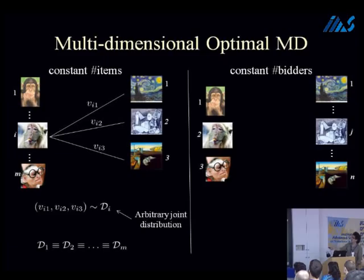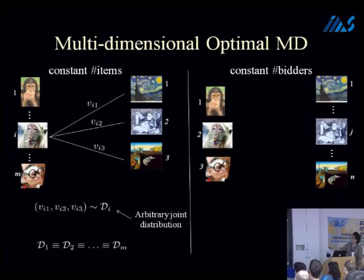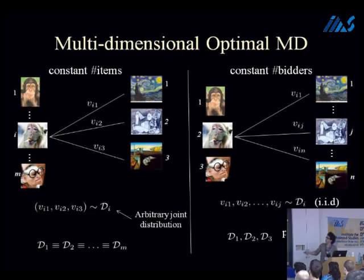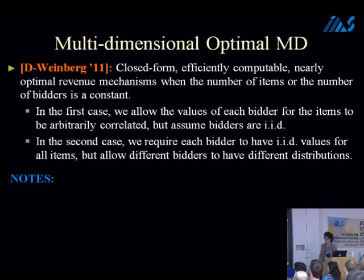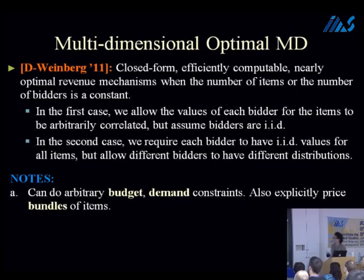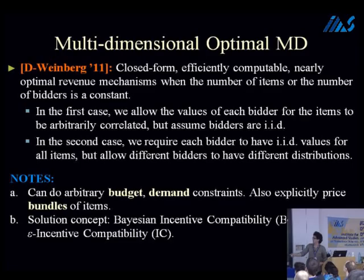The constant number of bidders result: I have three bidders, say, and N items — the values are IID from some distribution but this distribution could be different for different bidders. I can do arbitrary budget and demand constraints, and the mechanisms are actually price bundles. The solution achieves exact Bayesian incentive compatibility or epsilon incentive compatibility — you choose what you want. Nearly optimal means: when the value distributions are normalized to have support [0,1], I get an additive epsilon error from the best revenue; or if your distributions are monotone hazard rate, I get a multiplicative approximation.